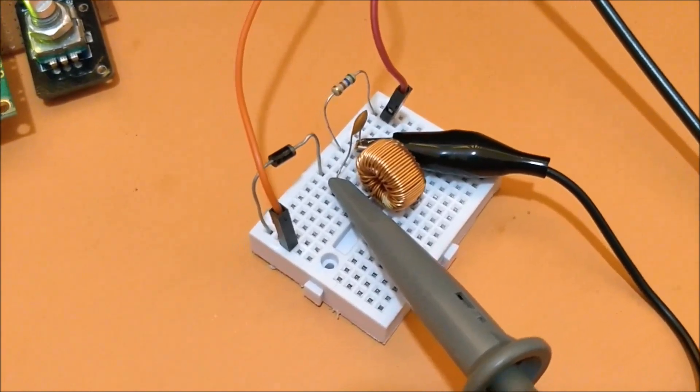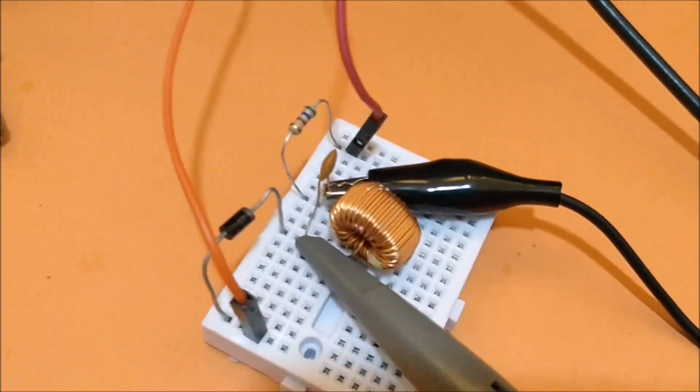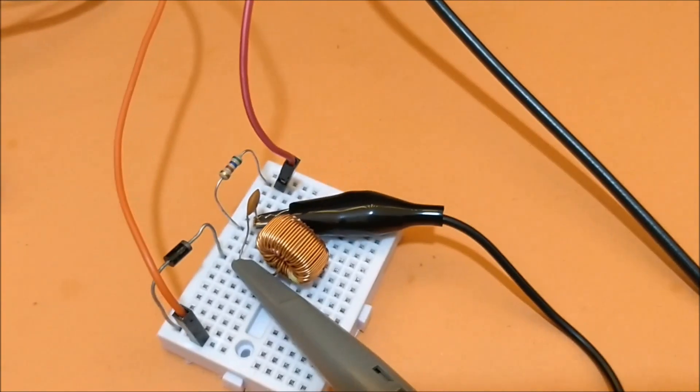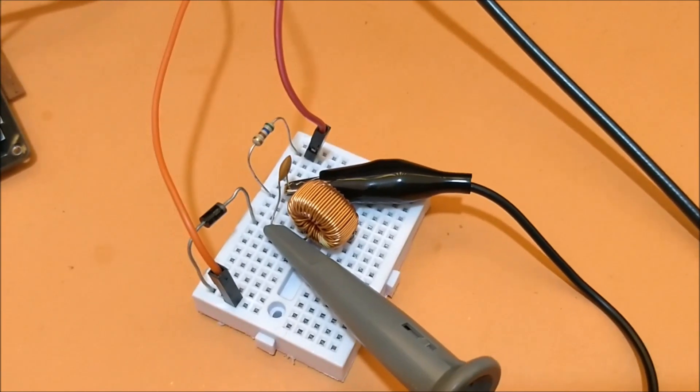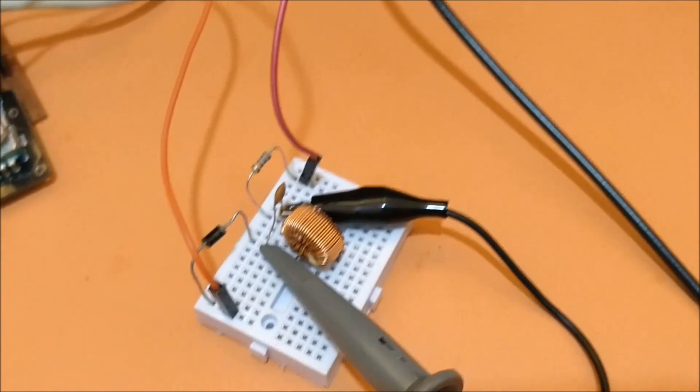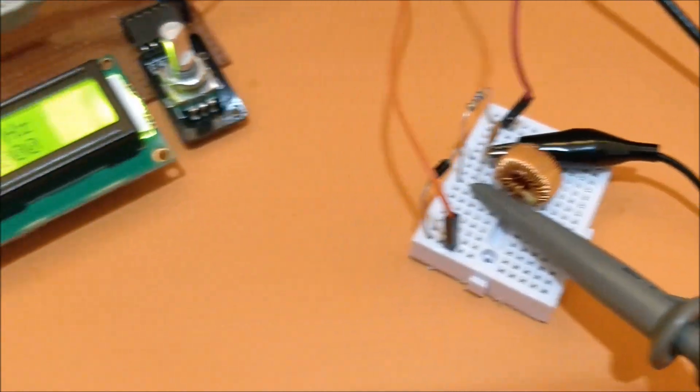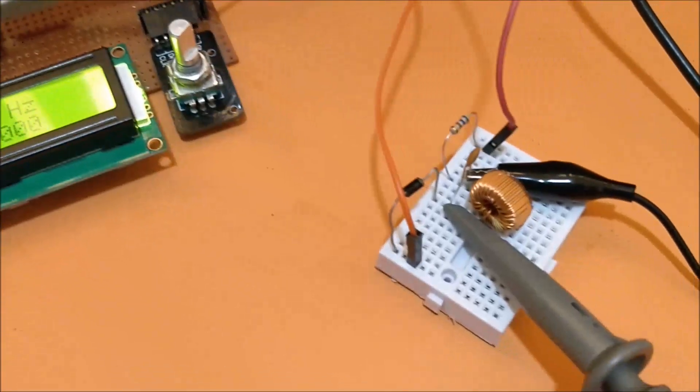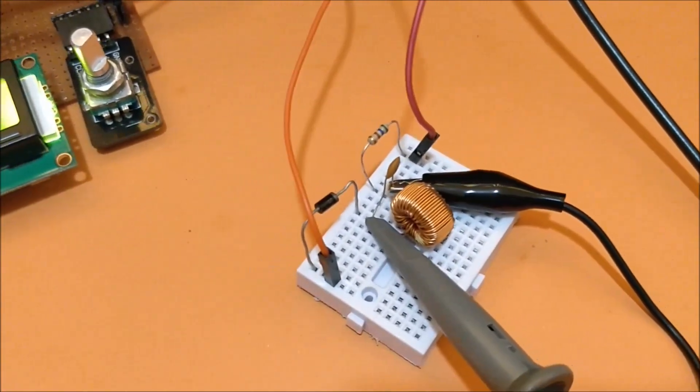So you can see the inductor and the capacitor making a tank circuit here. The diode will push the current only in one direction, and the current limiting resistor. The square wave for this circuit is produced by my waveform generator which we made in a previous project, so you can also check that out on Circuit Digest, how to make a waveform generator using Arduino.